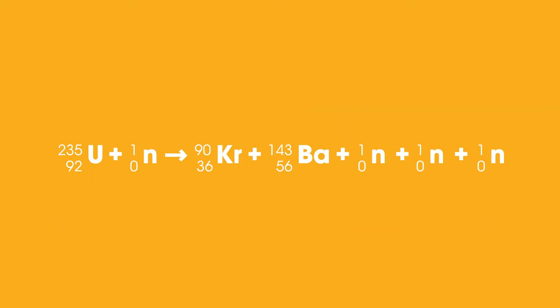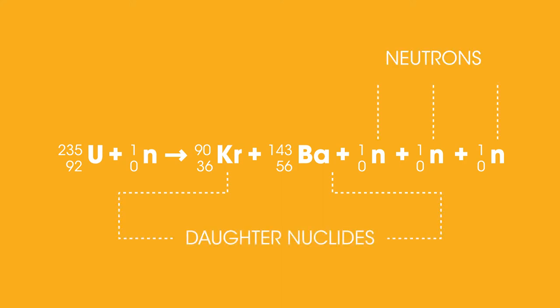Upon fission of a single nucleus of uranium you can see we get both barium and krypton, also called daughter nuclei, along with three neutrons. An atom of uranium will rarely undergo fission without first capturing a neutron.